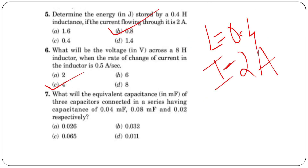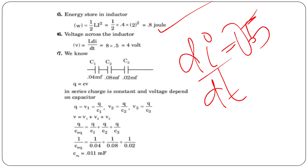What will be the equivalent capacitance of three capacitors connected in series, having capacitances of 0.04 F, 0.08 F, and 0.02 F? For capacitors in series, the formula is 1/C_eq = 1/C1 + 1/C2 + 1/C3, so: 1/C_eq = 1/0.04 + 1/0.08 + 1/0.02.